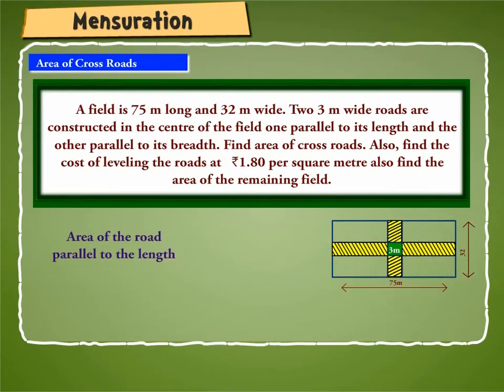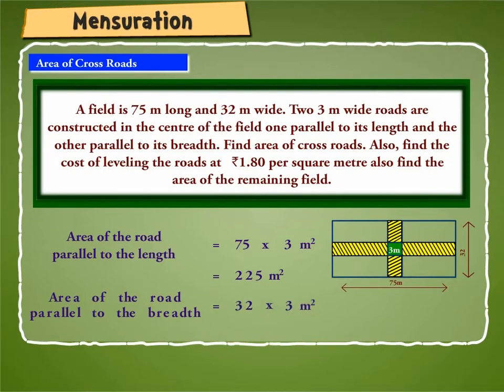Area of the road parallel to the length is equal to 75 into 3 square meter or 225 square meter. Area of the road parallel to the breadth is equal to 32 into 3 square meter or 96 square meter.